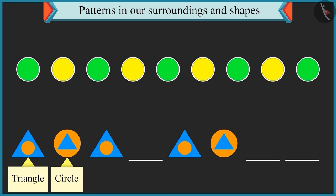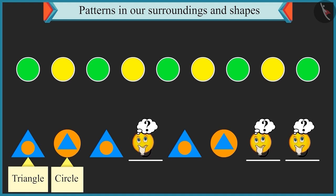Now, look carefully. There is a small circle shape inside the triangle and after that, there is a small triangle shape inside the circle in this pattern. This pattern is repeated again and again. Now, tell me, which shapes would come at the empty places?